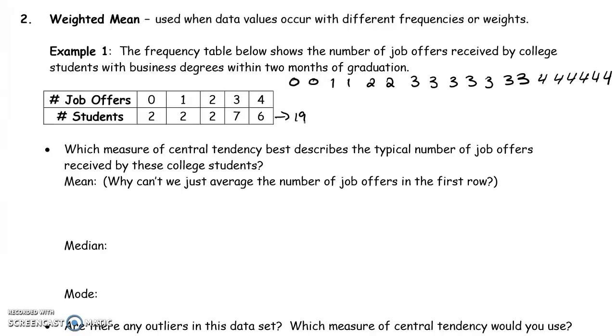So which measure of central tendency best describes the typical number of job offers received by these college students? We can't just take zero plus one plus two plus three plus four, because zero happens twice, three happens seven times. We have to consider this. Instead of having to write it all out this way, though, to find the mean, we can do this by taking what we call the weighted average, or the weighted mean.